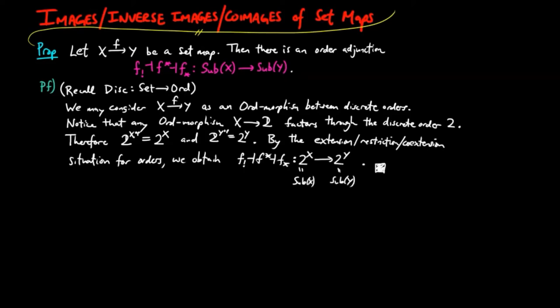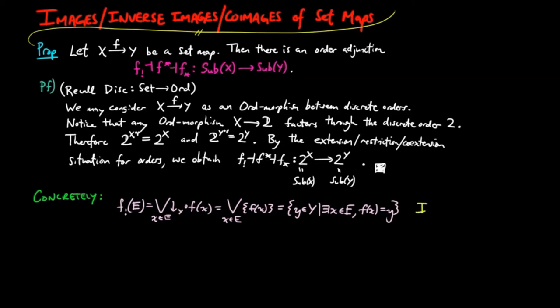So more concretely, we have the f extension on a subset e as the supremum of the lower segments on fx, ranging over x in e, which equals the supremum of the singleton sets f evaluated on x, where x is in e. This equals the set of all elements y in big Y such that there exists an x in e such that f of x equals y. In other words, it is the image of f.